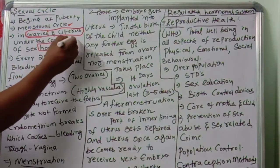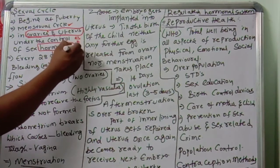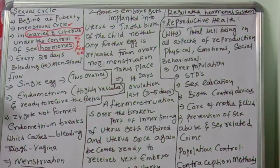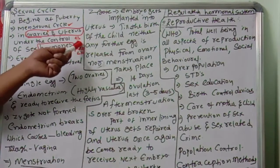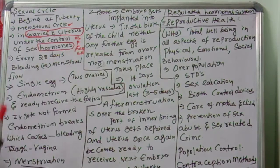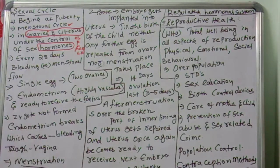This cycle is expressed under the control of sex hormones. The important hormones are estrogen, progesterone, follicle stimulating hormone (FSH), and luteinizing hormone (LH). Estrogen and progesterone are ovarian hormones, while FSH and LH are pituitary gland hormones. These four hormones play a very important role in the menstrual cycle. The cycle takes place every 28 days.